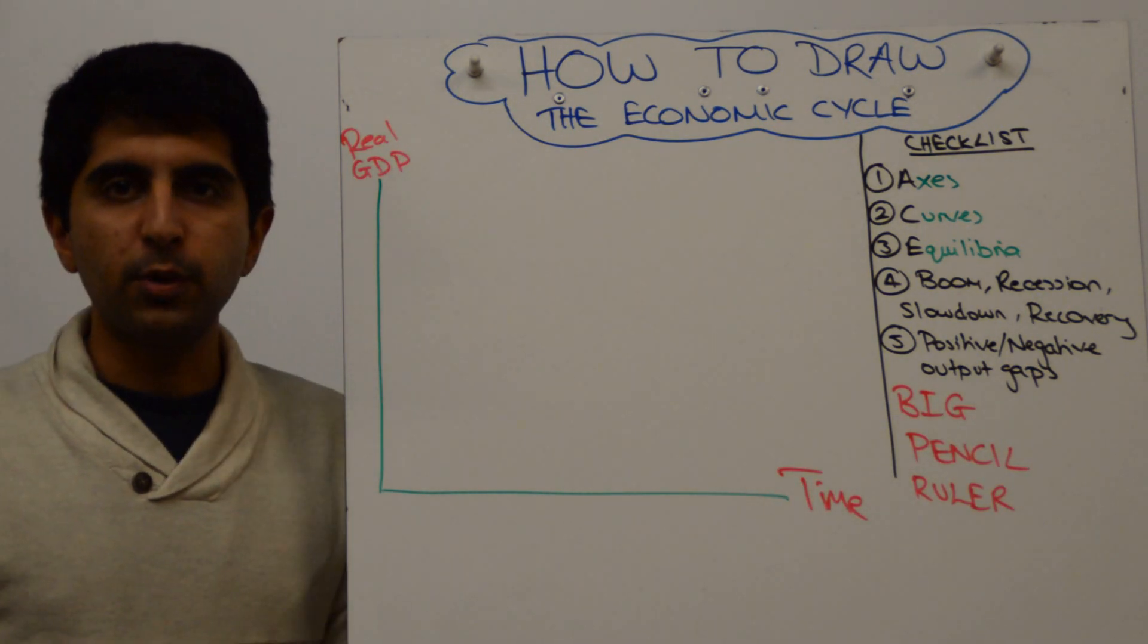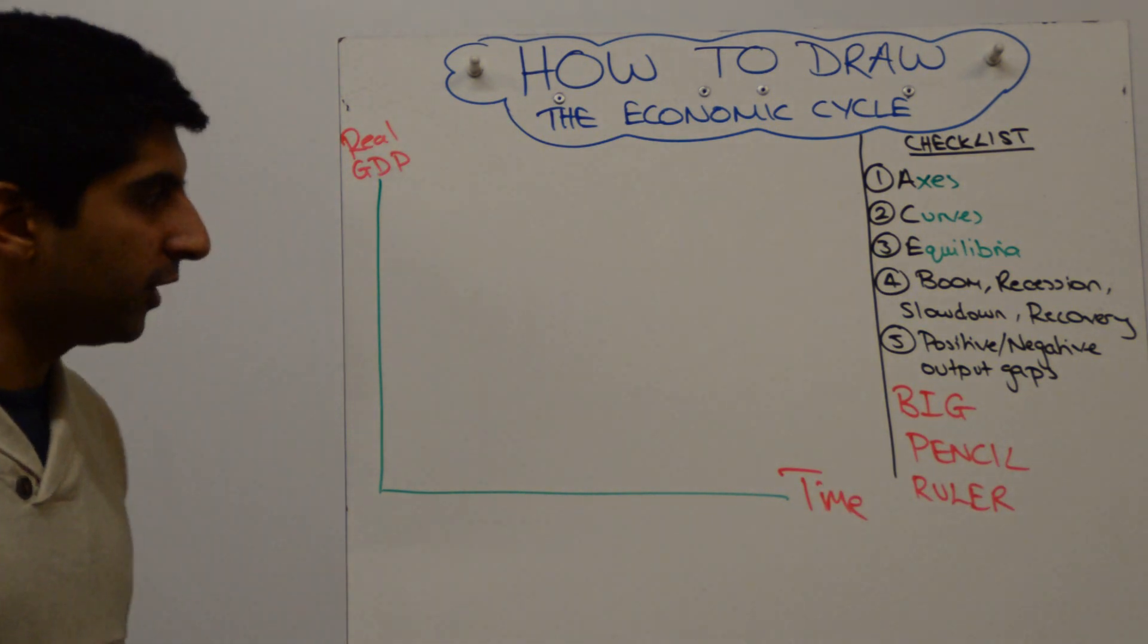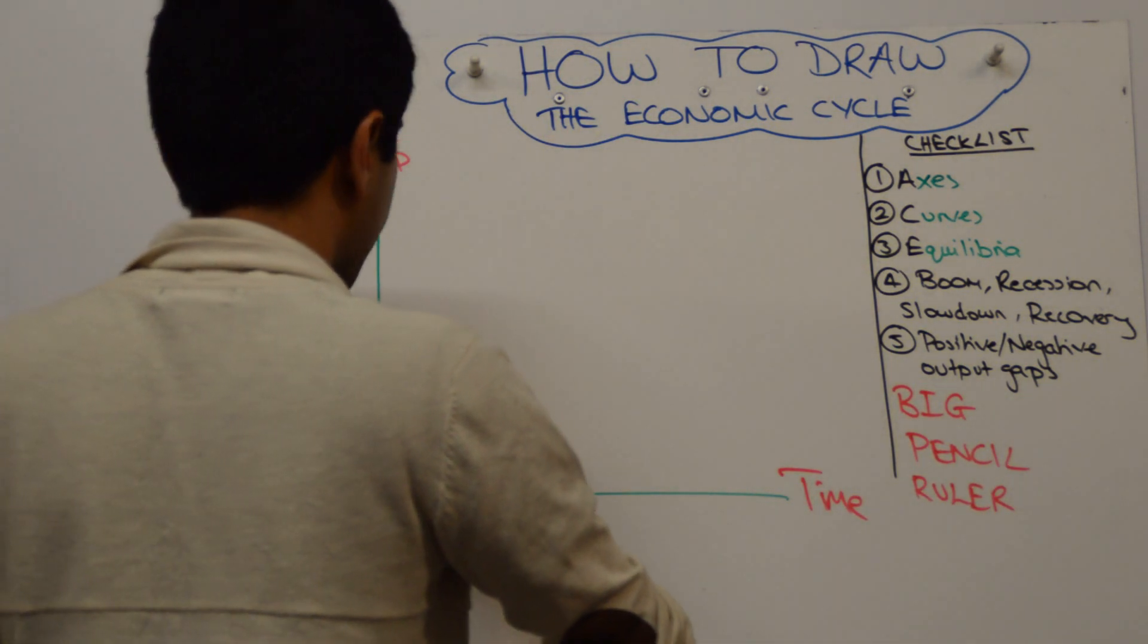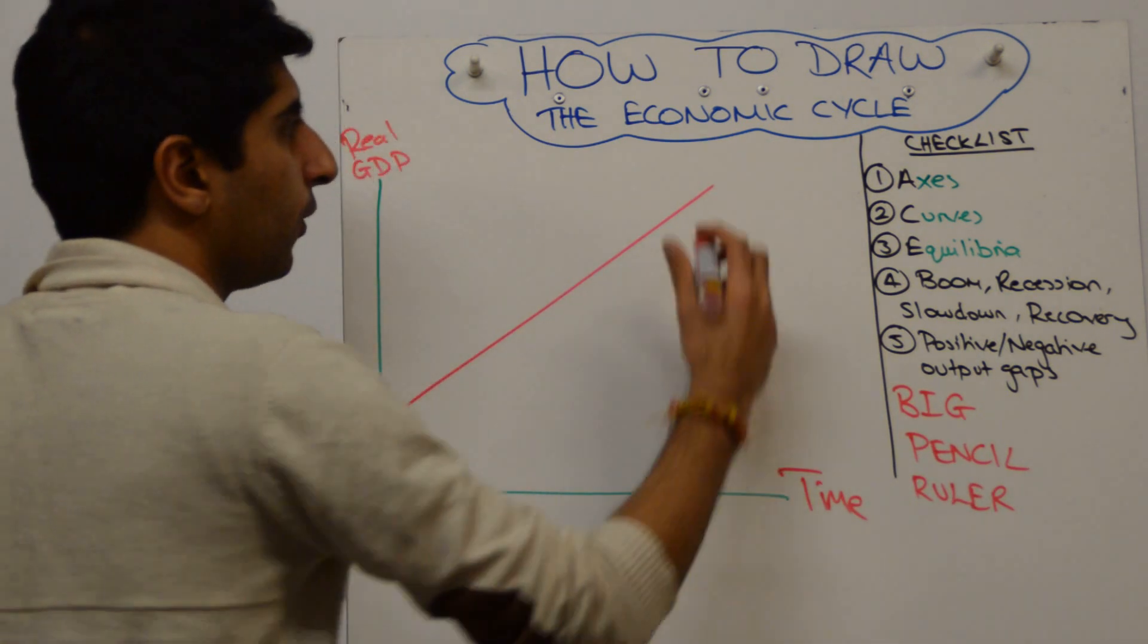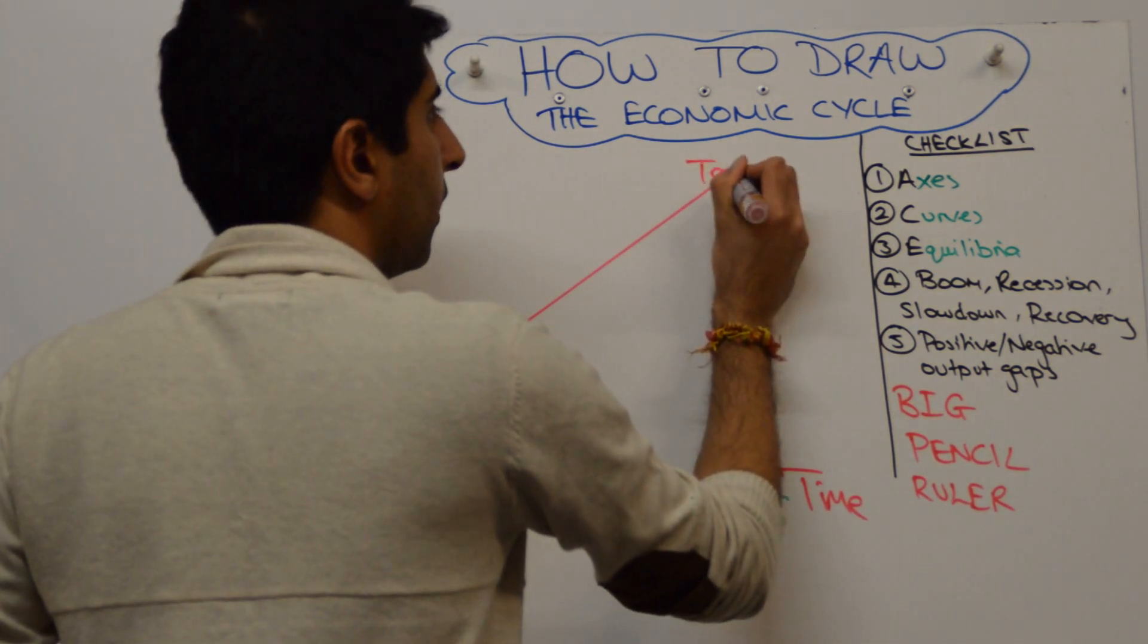What I would recommend doing next is drawing your trend rate of growth. So that constant upward sloping line. Draw that next and call that trend growth.